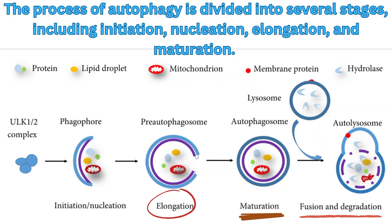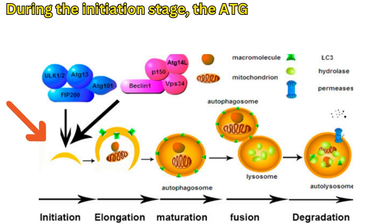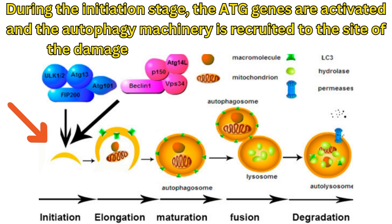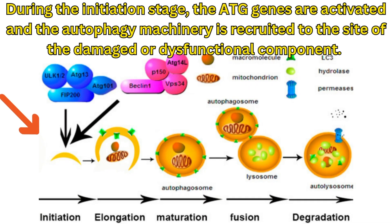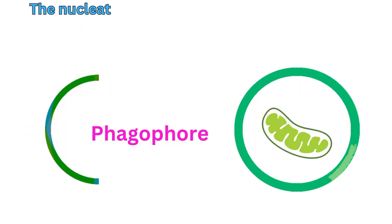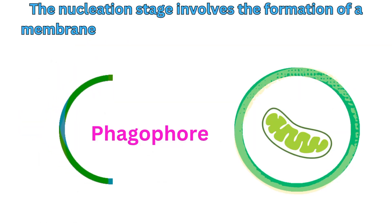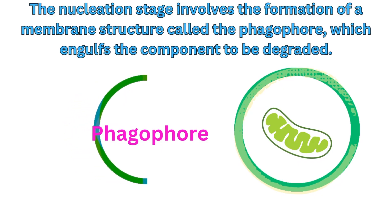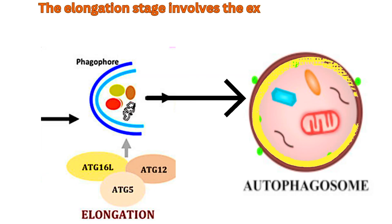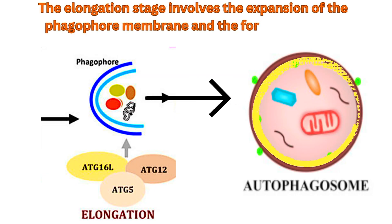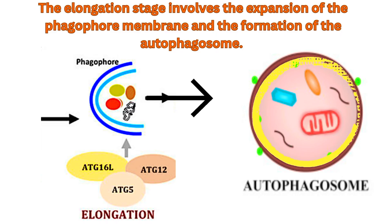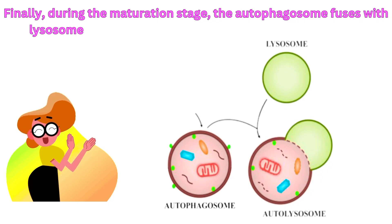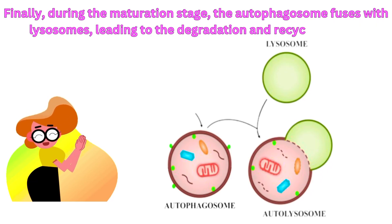During the initiation stage, the ATG genes are activated and the autophagy machinery is recruited to the site of the damaged or dysfunctional component. The nucleation stage involves the formation of a membrane structure called the phagophore, which engulfs the component to be degraded. The elongation stage involves the expansion of the phagophore membrane and the formation of the autophagosome. Finally, during the maturation stage, the autophagosome fuses with lysosomes, leading to the degradation and recycling of the component.